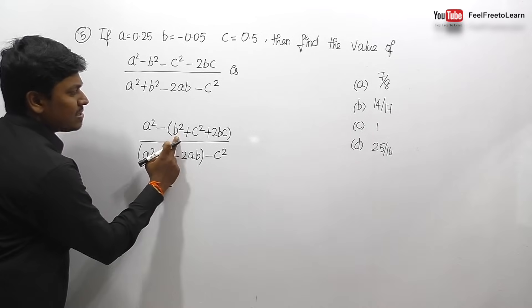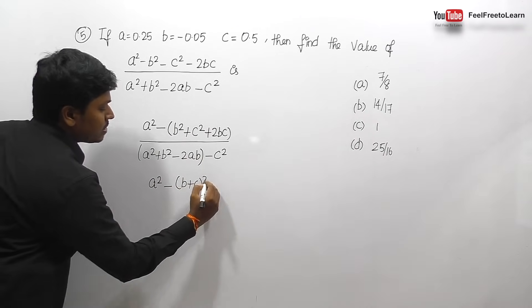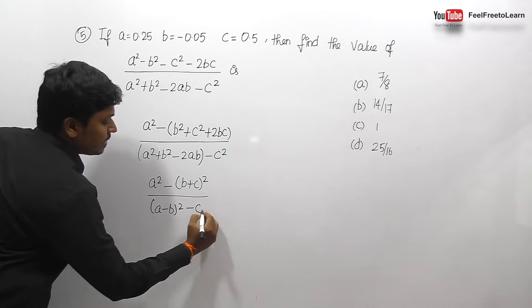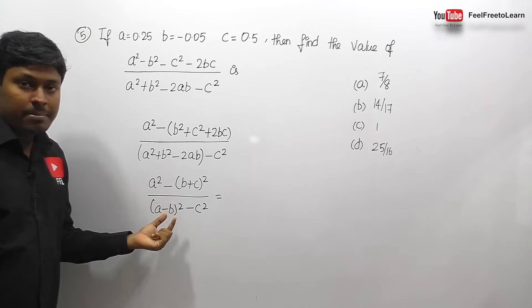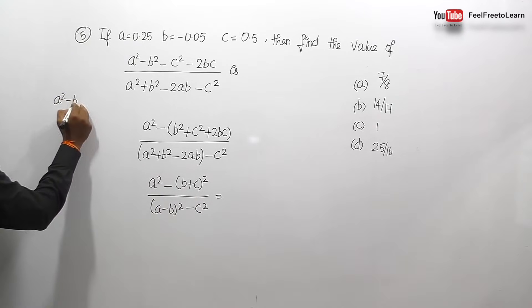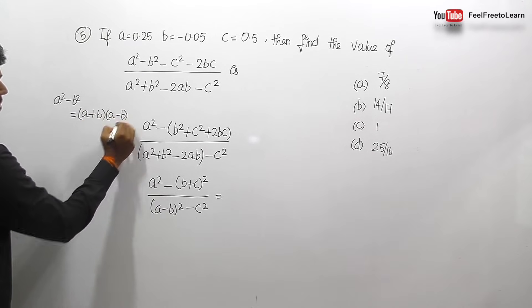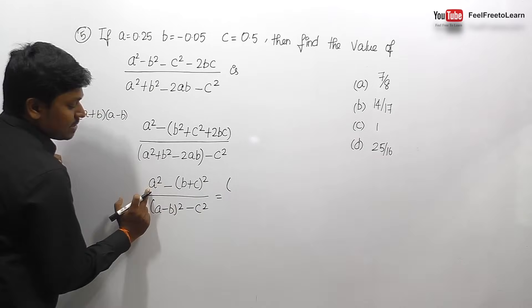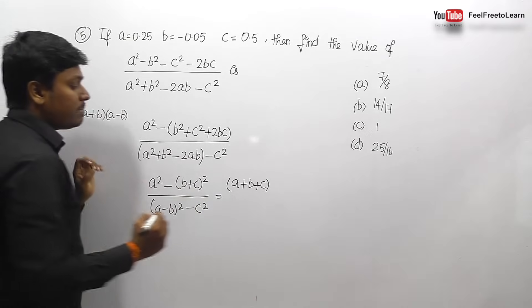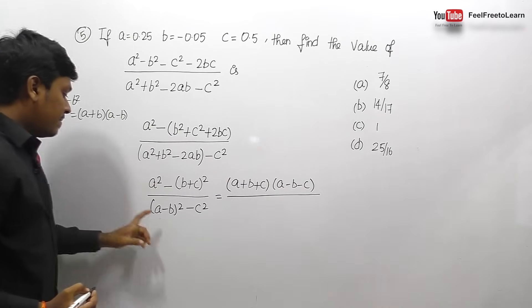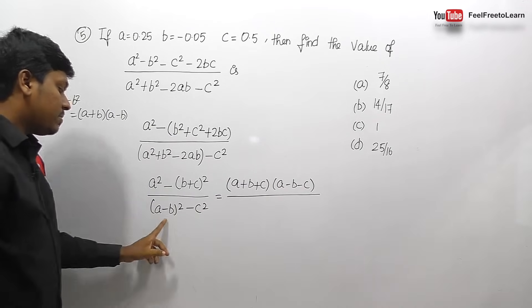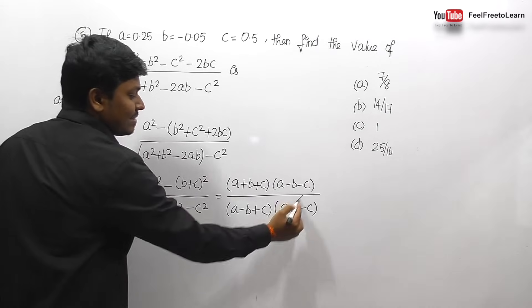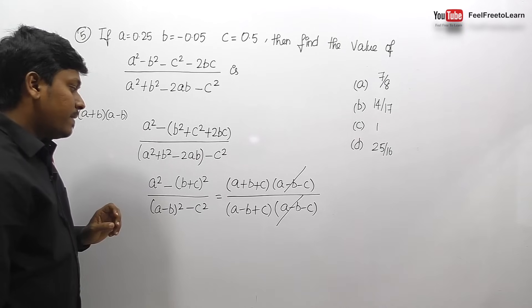The numerator can be written as a² minus (b + c)² and the denominator as (a minus b)² minus c². Both numerator and denominator are in the form A² minus B². Using the identity A² minus B² equals (A+B)(A-B): numerator gives (a + b + c)(a minus b minus c), and denominator gives (a minus b + c)(a minus b minus c). The common factor (a minus b minus c) cancels.